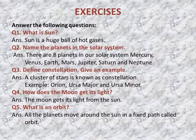I hope you understood the lesson. Now let us do some exercises. Answer the following questions. Question 1: What is the Sun? The Sun is a huge ball of hot gases. Question 2: Name the planets in the Solar System. There are 8 planets: Mercury, Venus, Earth, Mars, Jupiter, Saturn and Neptune. Question 3: Define constellation and give an example. A cluster of stars is known as a constellation. Example: Orion.